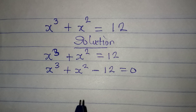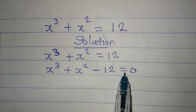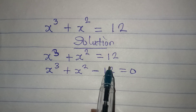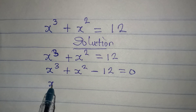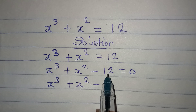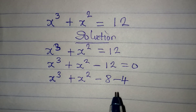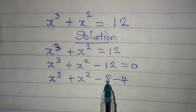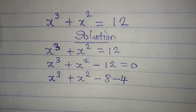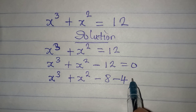Now, we have three terms before the equals sign, so it will be kind of difficult to factorize directly. I have to break this into two parts. I'm going to split 12 into 8 and 4, because 8 can be written in index form with power of 3, and 4 can be written in index form with power of 2. Put together they give minus 12, so this equals 0.